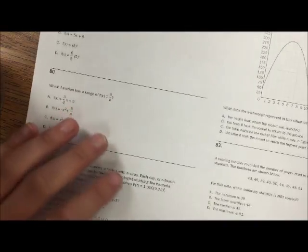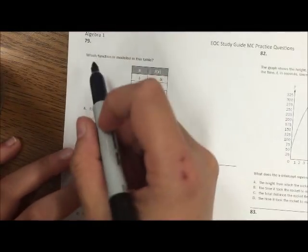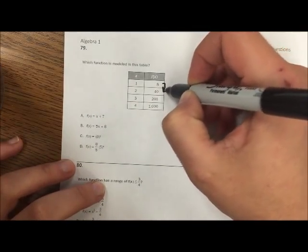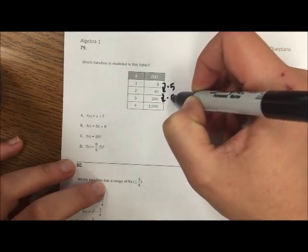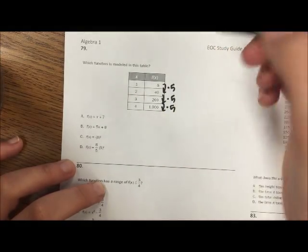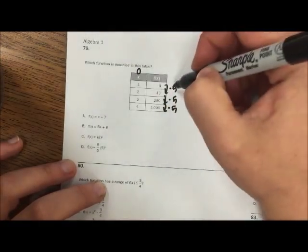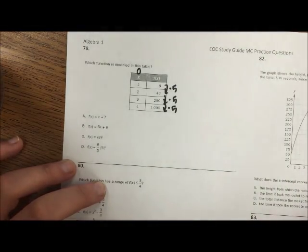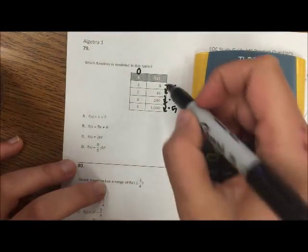Alright, 79 through 83. Which function is modeled in the table? So let's figure out how I'm changing. Well, I can see that I'm multiplying by 5, and that my starting point is actually when x is 0. So the opposite of multiplying by 5 is dividing by 5.